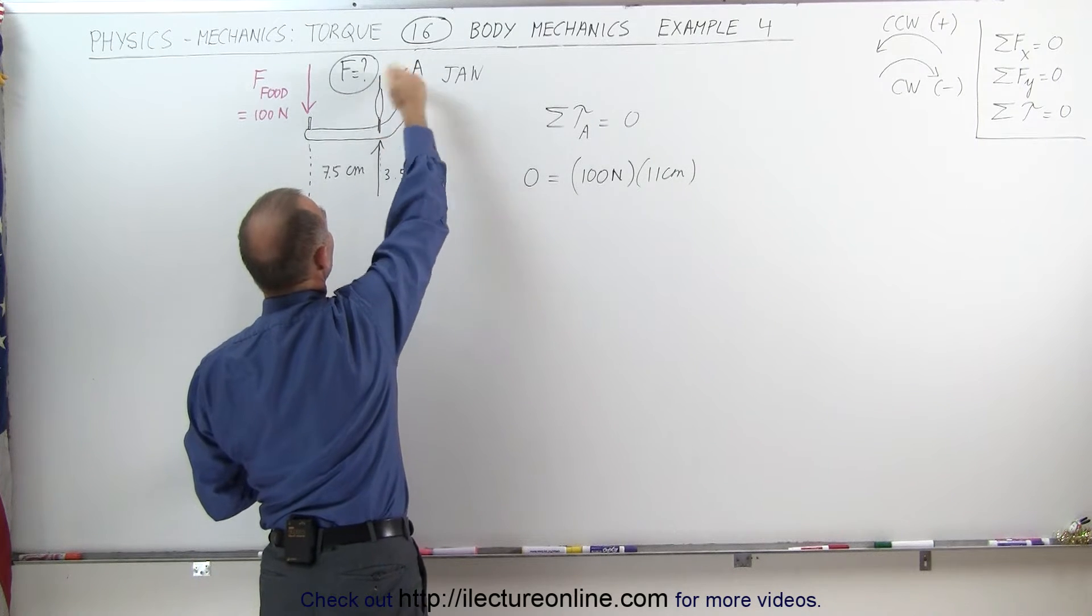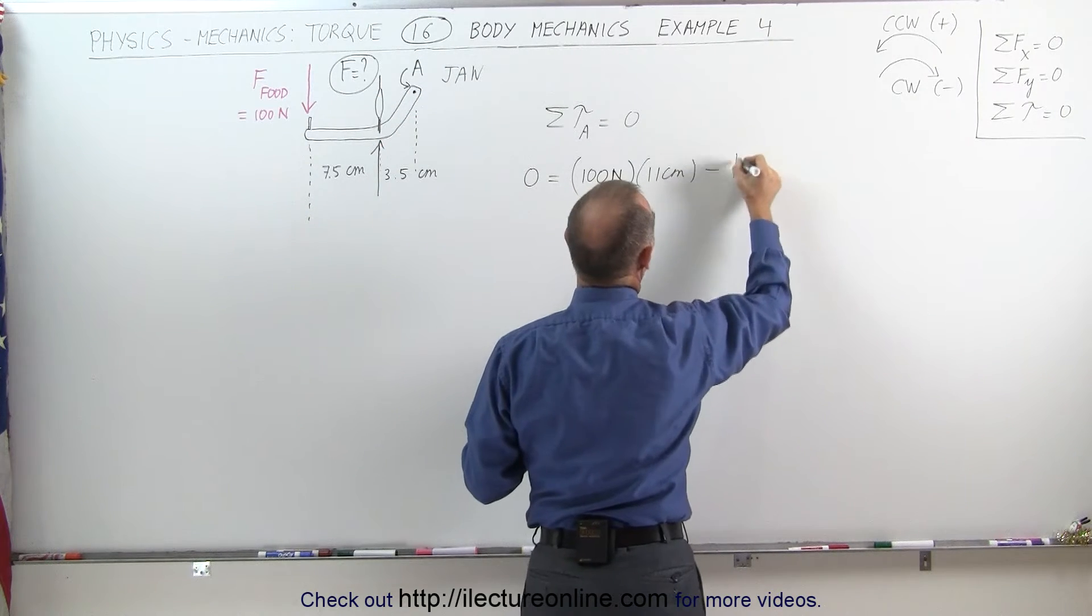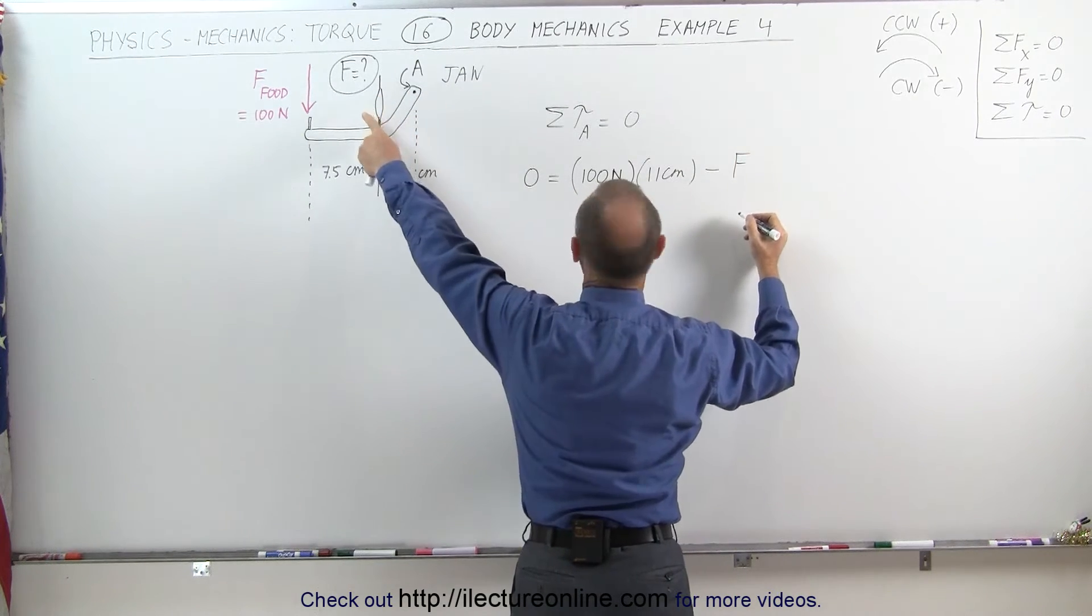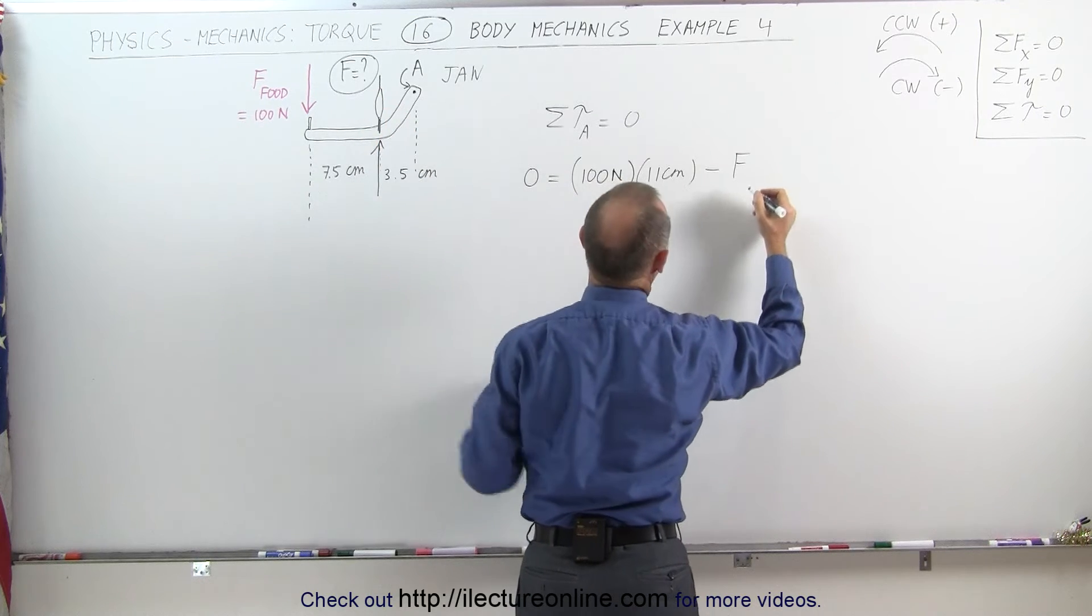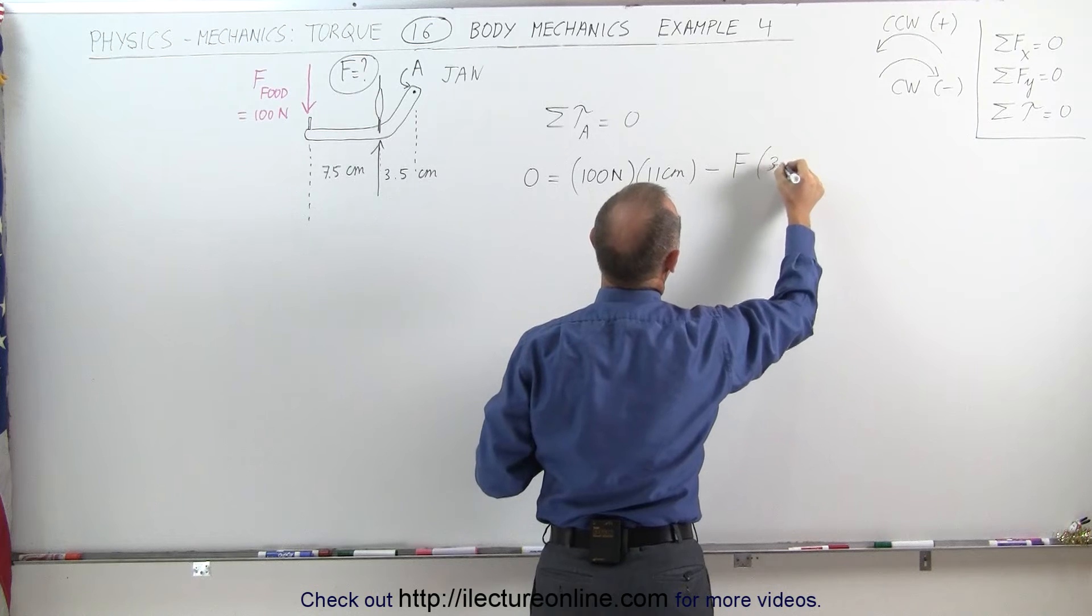Now we have the muscle pulling the jawbone in this direction, that is a clockwise direction, that's a negative torque, so minus the force of the muscle pulling up on the jawbone times the distance, and the distance here would be 3.5 centimeters.